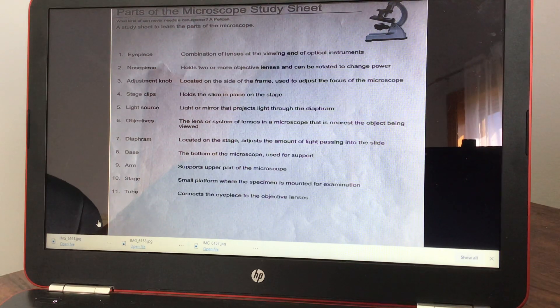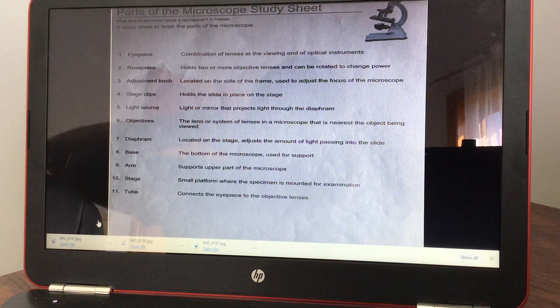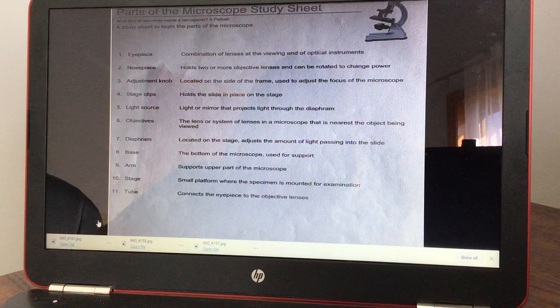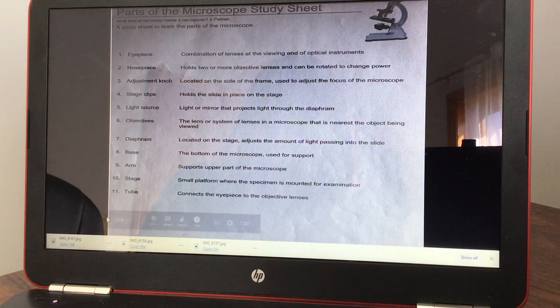Arm supports upper part of the microscope. Stage: small platform where the specimen is mounted for examination. And 11 is tube.